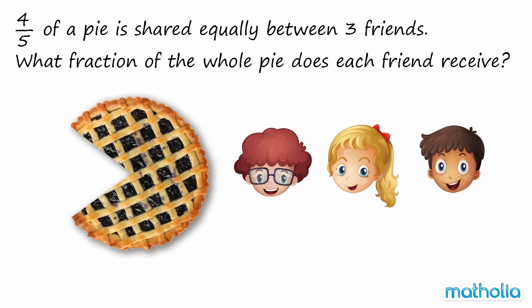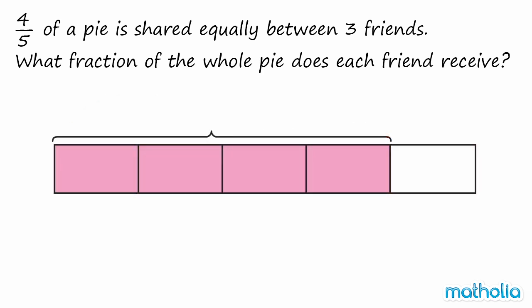4 fifths of a pie is shared equally between three friends. What fraction of the whole pie does each friend receive? We need to find 4 fifths divide 3. Let's draw a model to help find the answer.